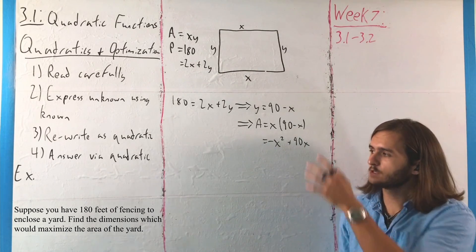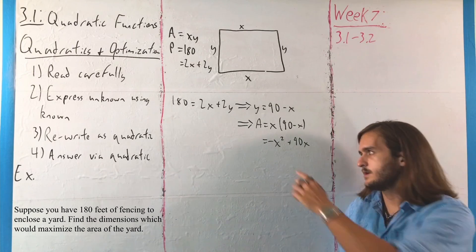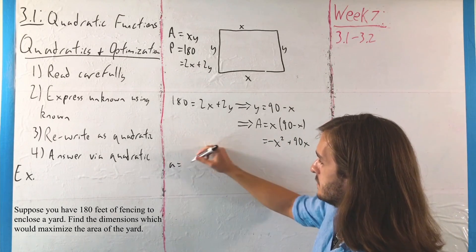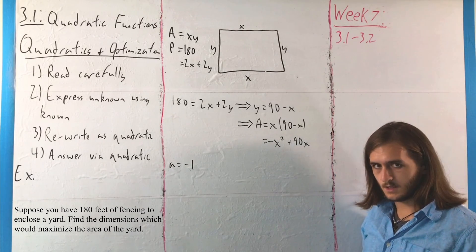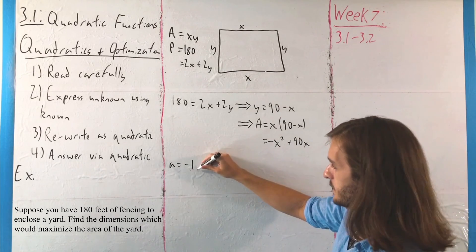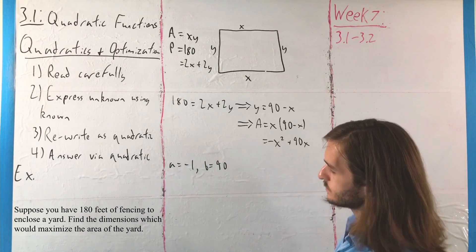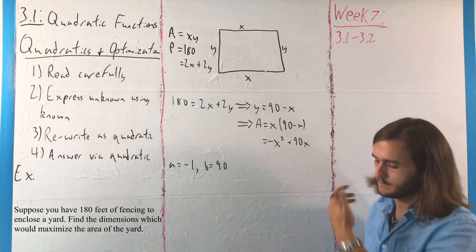And now that we have this in our right form, we have this in our right amount of pieces, we can get our extreme value. Here, because a is negative, in particular a is negative 1, we know it's going to be a maximum. So we're on the right track for sure.